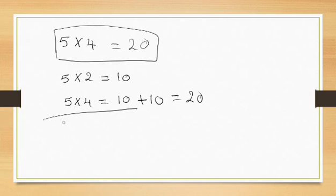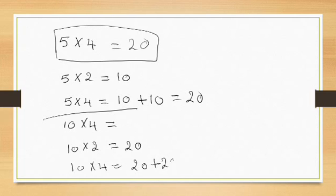Another example, 10 times 4. Of course 10 times 4 equals 40, but let us make it by this way. We know that 10 times 2 equals 20. So 10 times 4 equals 20 plus 20, which is equal to 40.